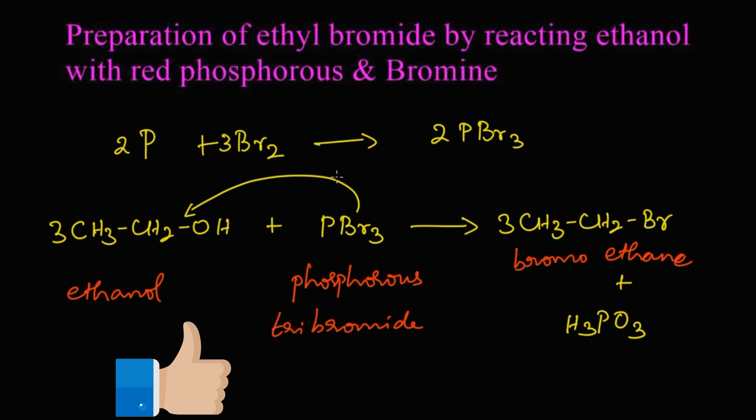Let's summarize the reaction. PBr3, that is phosphorous tribromide, is produced in the situation by adding red phosphorous with bromine. The phosphorous tribromide which is formed freshly reacts with ethanol and produces bromoethane as I explained along with the phosphorous acid.